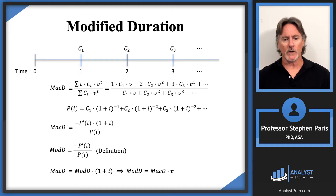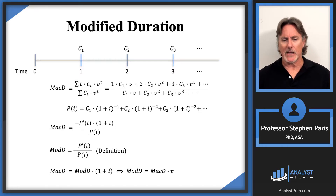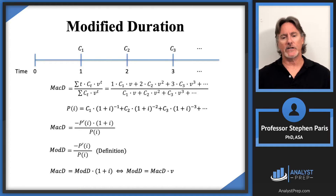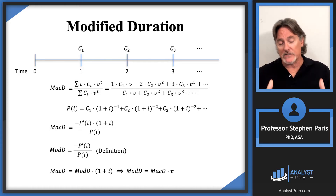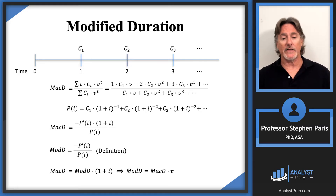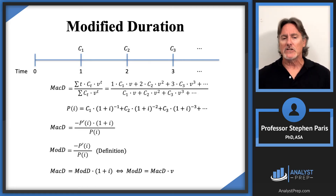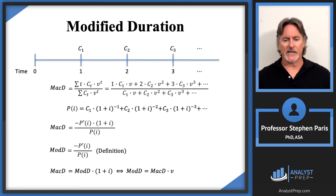That's how we tweak the Macaulay duration to get the modified duration. In practice, when asked to calculate a modified duration, my typical approach is to calculate the Macaulay duration first and then use the relationship that modified duration equals Macaulay duration times v. We'll look at some examples in the next few videos.